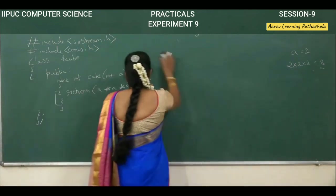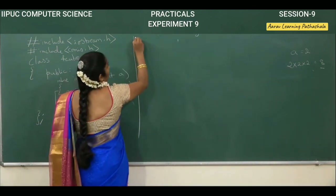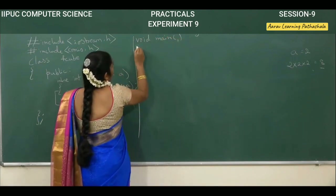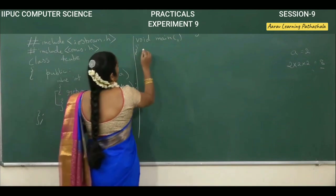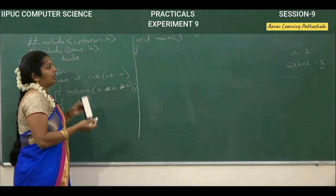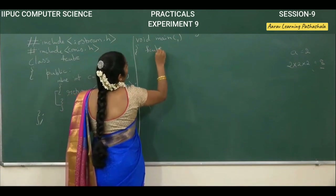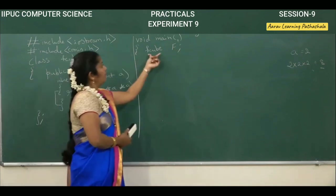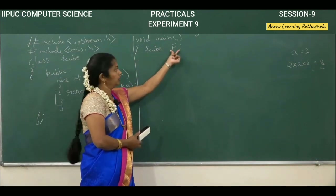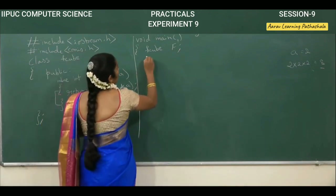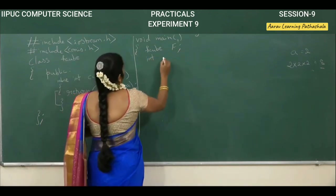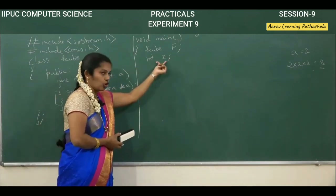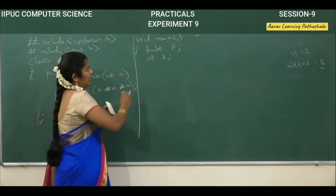Now we start the main program with void main. We open the main program. First, we create the object: fcube is the class name, then one space, then f is the object name. Next, we declare the variable: int x. Here x is the actual argument and a is the dummy (formal) argument.